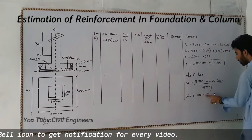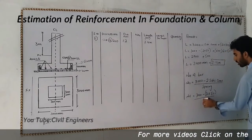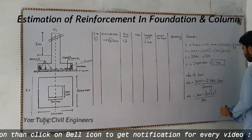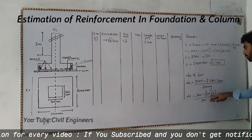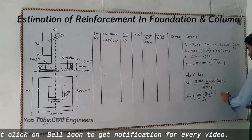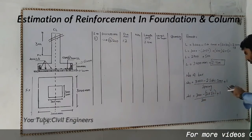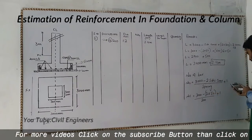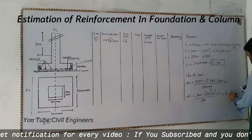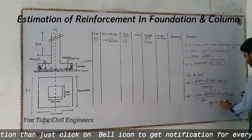Numbers = (3,000 minus 2×50) divided by 200, plus 1. So: 3,000 minus 100 equals 2,900, divided by 200 equals 14.5, plus 1 — which we round up to 15 numbers. So we need 15 bars along the x-axis.